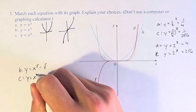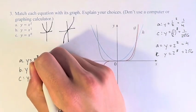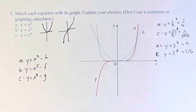Y equals x to the eighth is represented by g. And y equals x squared, the only one left, is represented by h.